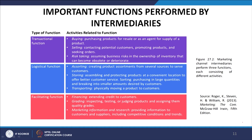Activities related to transactional functions are: buying — purchasing products for resale or as an agent for supply of a product; selling — contracting potential customers, promoting products, and seeking orders; and risk taking — assuming business risk in the ownership of inventory that can become obsolete or deteriorate. Activities related to logistical functions include: assorting — creating product assortments from several sources to serve customers; storing — assembling and protecting products at a convenient location; and sorting — purchasing in large quantities and breaking into smaller amounts desired by customers.